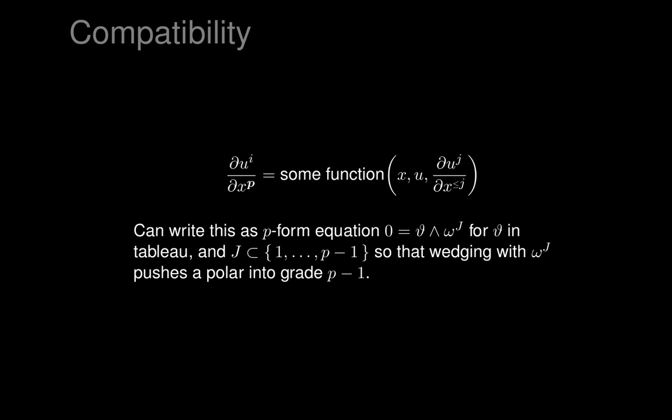We can write the equation as a p-form equation: 0 equals theta wedge omega_j. We take any theta in our tableau — we imagine we have a tableau for the exterior differential system — and we wedge with various omegas, omega_1, omega_2, and so on, possibly all the way up to omega_{p-1}. We wedge up this theta as much as needed so that it reaches grade p-minus-1. Since S_p is zero, there are no polars in the last grade p. All the polars are in the lower grades, up to p-minus-1. So we take those thetas in our tableau and wedge them up until they all reach grade p-minus-1.